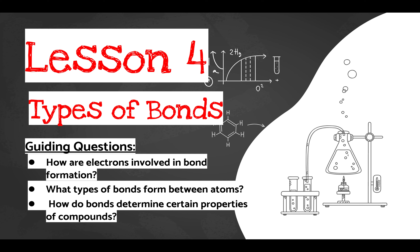Lesson four is called 'Types of Bonds.' In this section we're going to talk about how electrons are involved in bond formation, what types of bonds form between atoms, and how bonds determine certain properties of compounds.